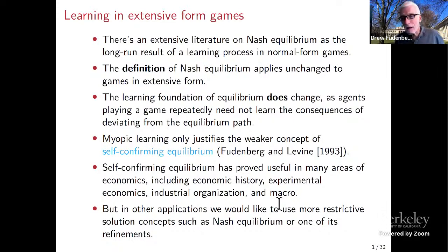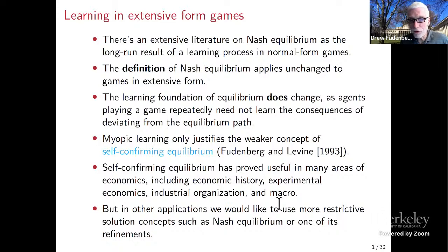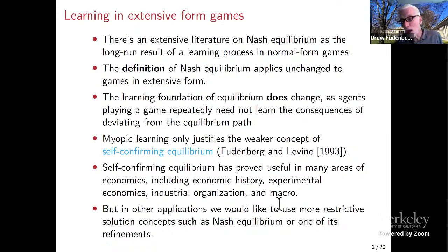Before I get to that, I thought it'd be helpful to do a little bit of a review to set the stage, and then I'll get to the new stuff in the second half of the talk. Just to get on the same page: there's now quite an extensive literature on the way that Nash equilibrium in a game can arise as a longer-run result of a learning process, at least if the game is a one-shot simultaneous move game played in the normal form.